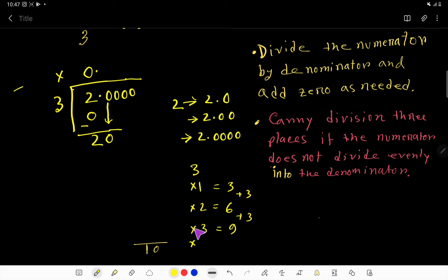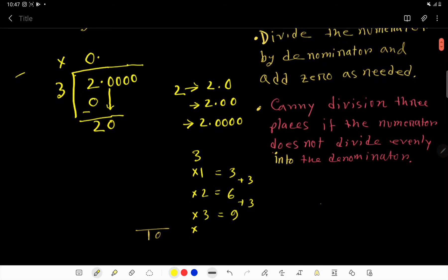Then 3 times—here we have 20, but we are getting 9, so we need more. 3 times 4, we get 12. Just we have to add 3 with this 9. And 3 times 5, we are getting here 15.